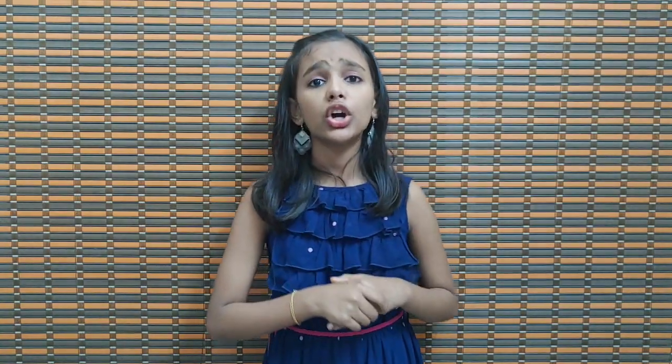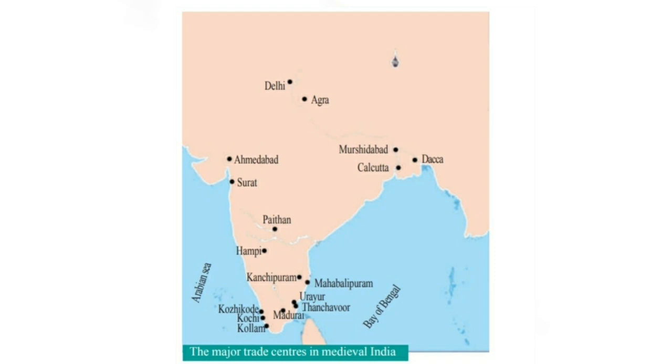Now we are going to study a map showing the major trade centres in India. Looking at the map, we can see that these trade centres are situated near the sea coast, because European travellers needed sea transportation to reach India and go back. These are the major trade centres in India.